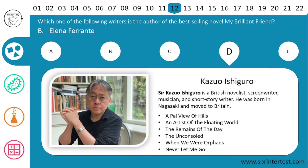Answer D is Sir Kazuo Ishiguro, a British novelist, screenwriter, musician, and short story writer. He was born in Nagasaki but later moved to Britain. His novels include A Pale View of Hills, An Artist of the Floating World, The Remains of the Day, The Unconsoled, When We Were Orphans, and Never Let Me Go — all very beautiful books worth reading if you have time.